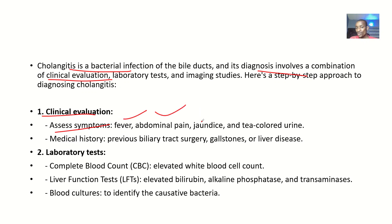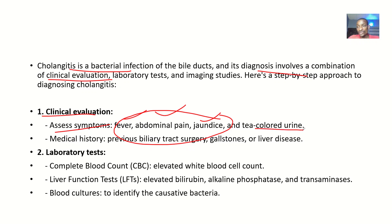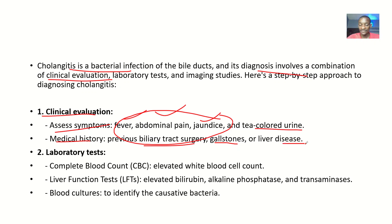For clinical evaluation, you assess for symptoms like the level of fever, abdominal pain, and jaundice. When you have fever, abdominal pain, and jaundice together, that is known as the Charcot's triad — so you start suspecting inflammation. If there is tea-colored urine, you are suspecting elevated bilirubin. You also look at the medical history of the patient — ask if they have had any biliary tract surgery, if they have been told they have gallstones, or if they have had any liver disease.